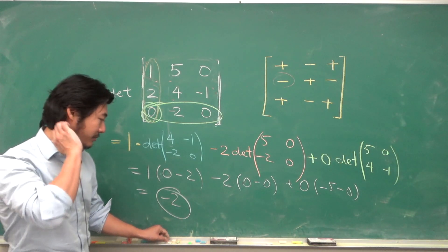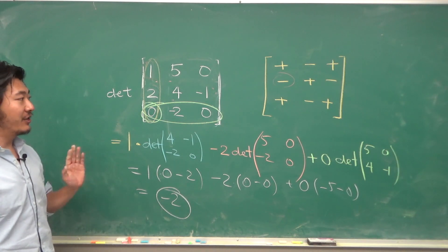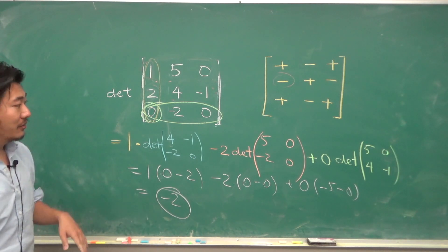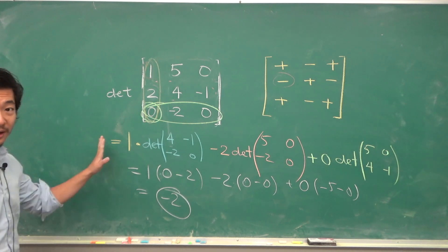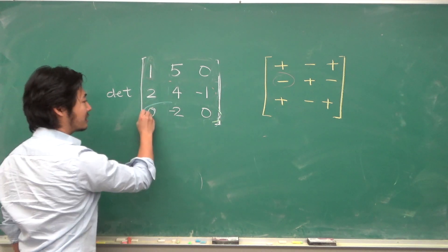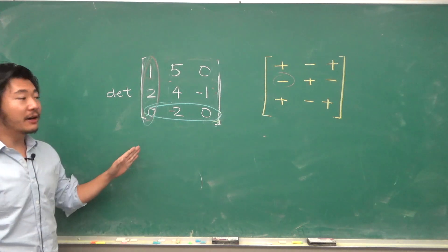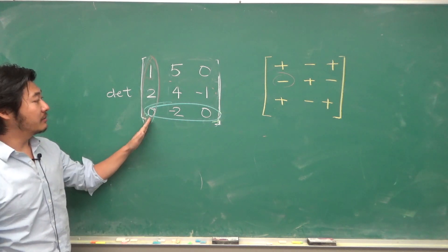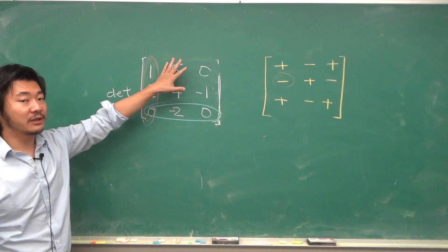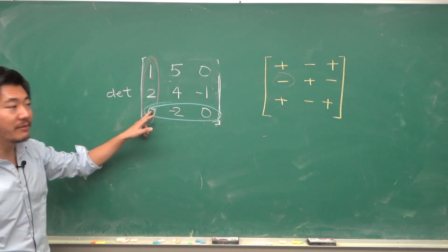As you can see, the more zeros you have on the column or row that you pick, the better. Let's compute this in another way — this time, fix this row. When we take out each column, a 0 times a submatrix determinant doesn't matter, so those terms vanish.